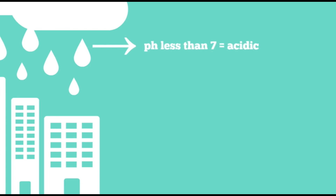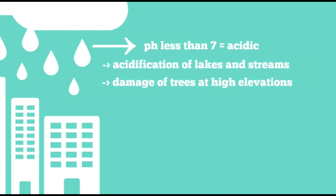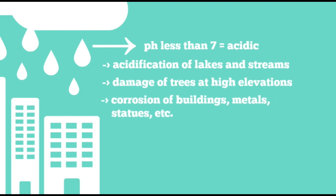But this rain is pretty much different from the others. The sulfur dioxide will reduce the pH of the water to less than 7.0, making it acidic. When it rains down to the earth, it will cause several damages, such as the acidification of lakes and streams, damage of trees at high elevations, and the corrosion of buildings, metals, statues, etc.